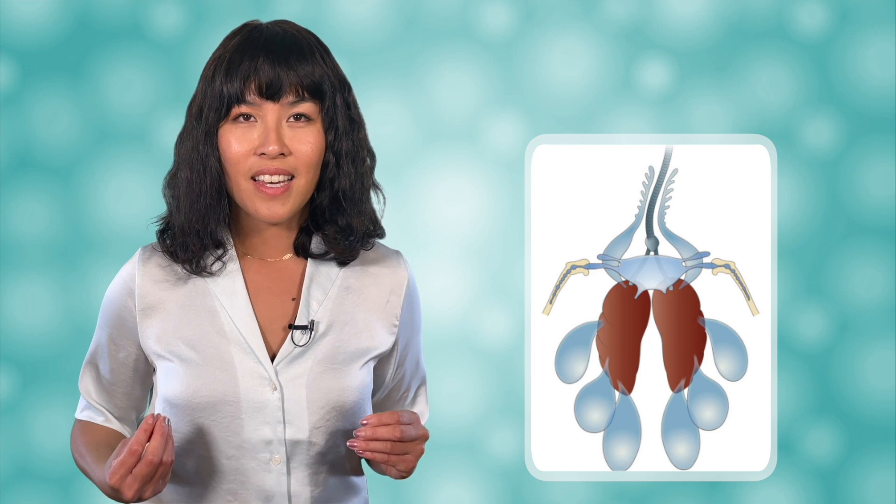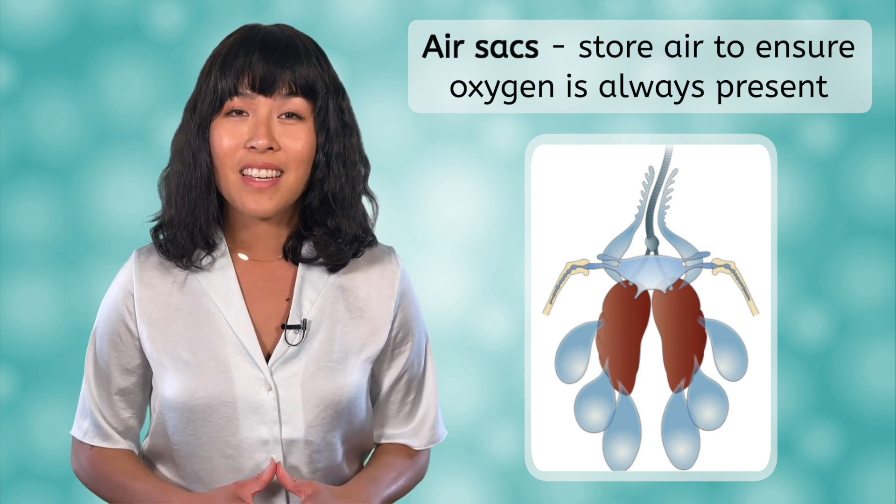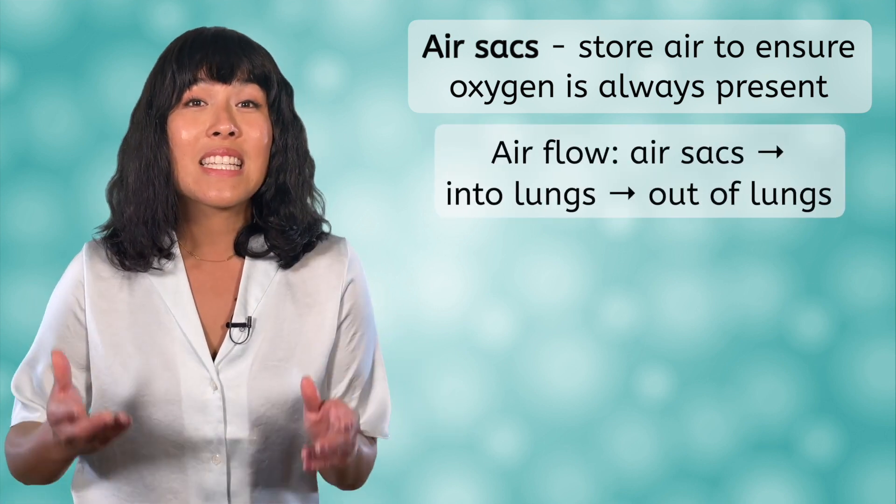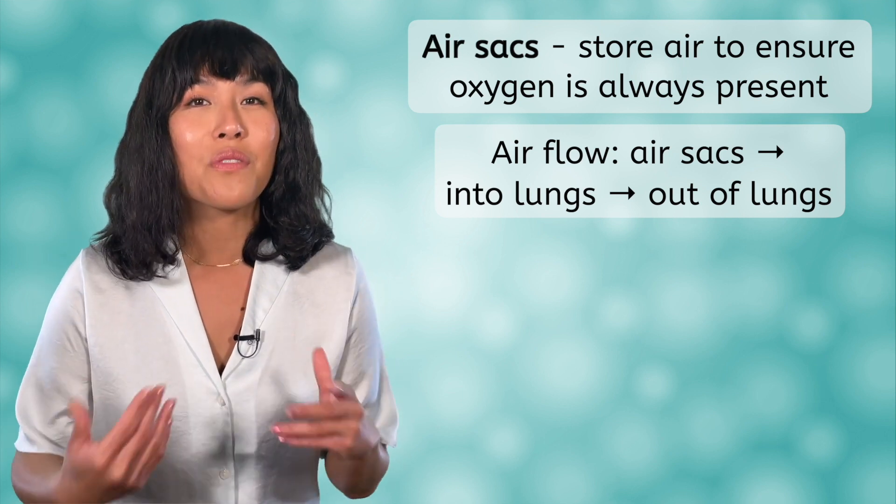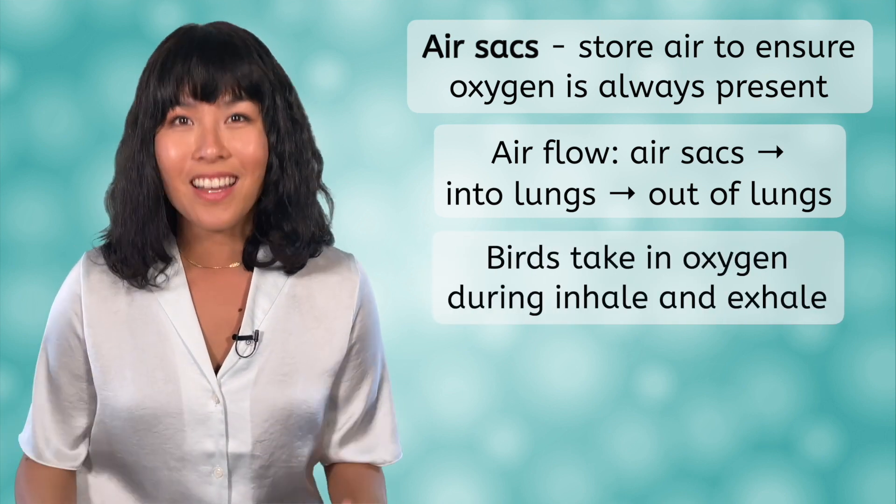The final anatomical system we are going to discuss is the respiratory system. As with the rest of their anatomy, birds have evolved unique systems to help them stay light, so that they can be efficient in the air. One such adaptation is the presence of air sacs attached to the lungs. The air sacs only store air and ensure that there is always oxygenated air present in the lungs. In the respiratory system of birds, air flows in only one direction. Oxygen flows into the air sacs, then into the lungs, and lastly, out of the lungs. This process allows birds to take in oxygen during both their inhales and their exhales. Think how much faster and farther you could run if you could take in oxygen during your exhale as well as your inhale.